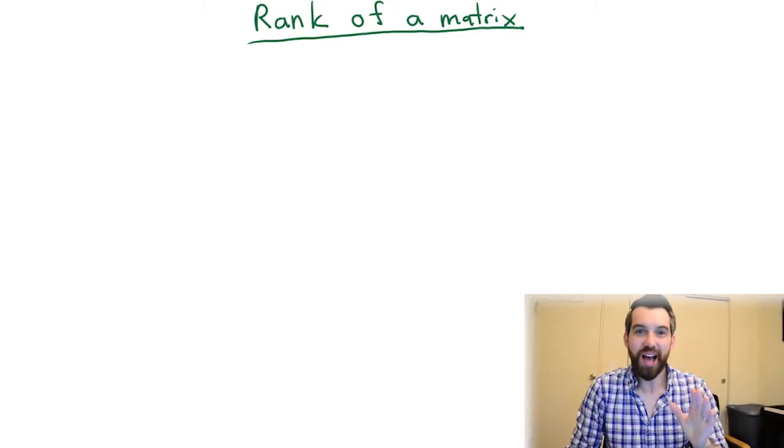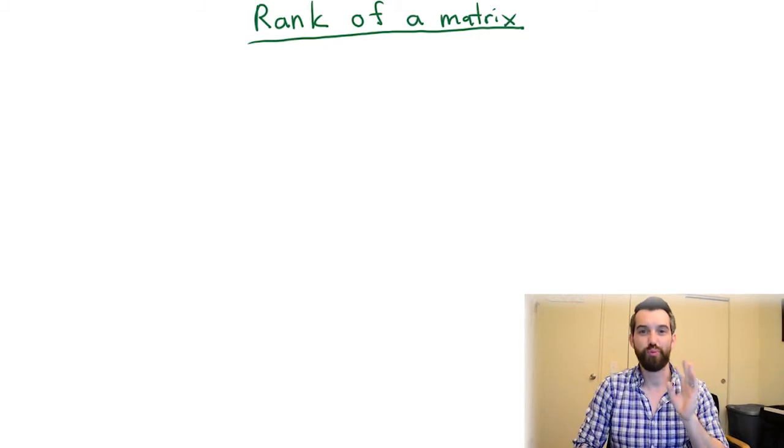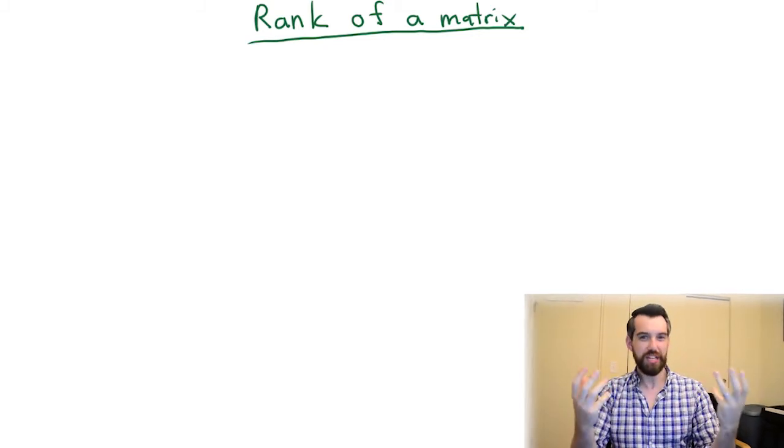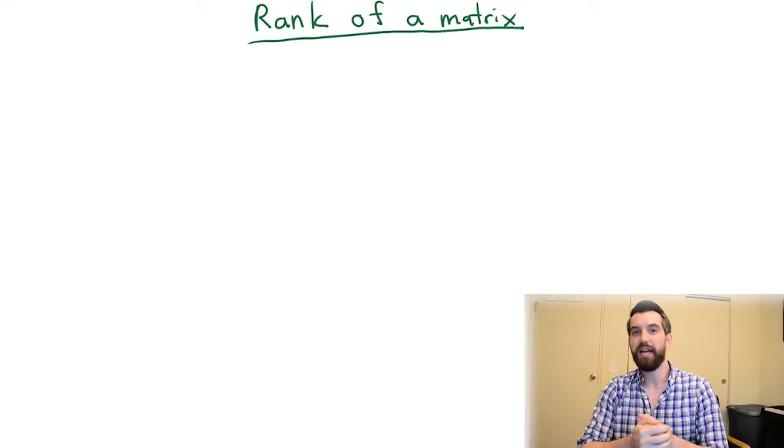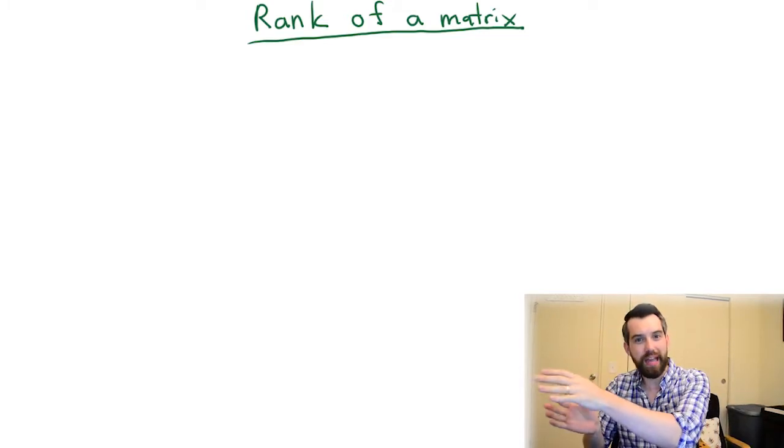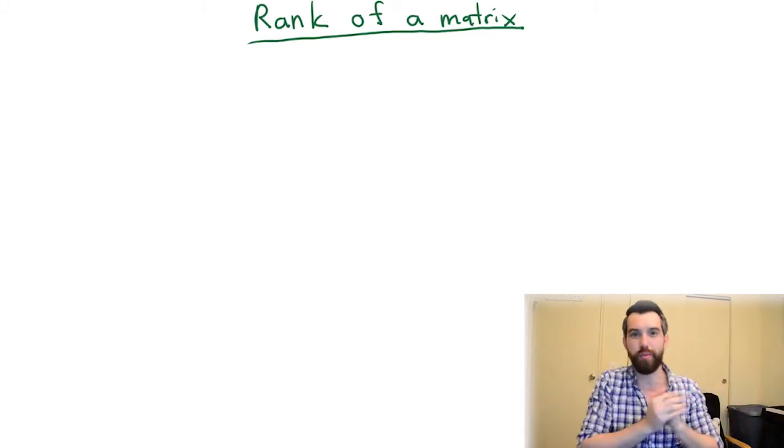We're talking about the idea of rank. Imagine you have some linear transformation. Think about it dynamically. A linear transformation picks up vectors in the domain and spits out vectors in the codomain.